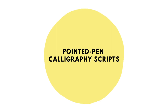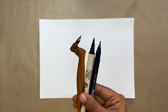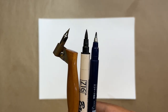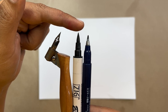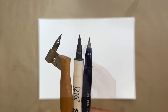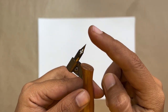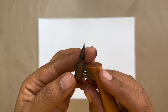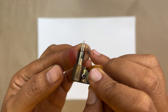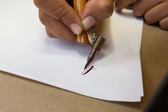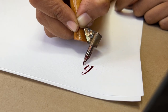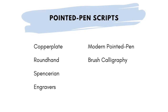Now let's talk about pointed pen calligraphy scripts. Opposite to broad-edged, these calligraphy scripts are written using a pointed pen. The tip is usually flexible and gives thick strokes upon applying pressure, whereas you can create hairlines by just using the pointed tip. The most common tools are pointed nibs — you may have seen them on Instagram fitted inside either a straight or oblique holder. These nibs split on applying pressure and make way for more ink to flow for the thick downstrokes, whereas you can make thin hairlines with the tip. Some examples of pointed pen calligraphy scripts are copperplate, roundhand, Spenserian, engravers, modern pointed pen, and brush calligraphy.